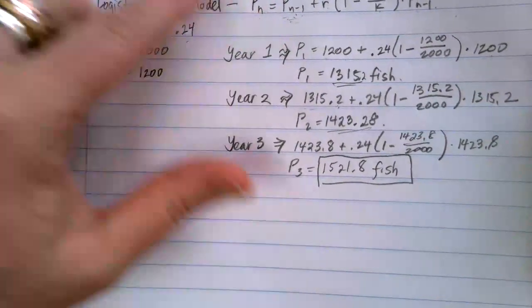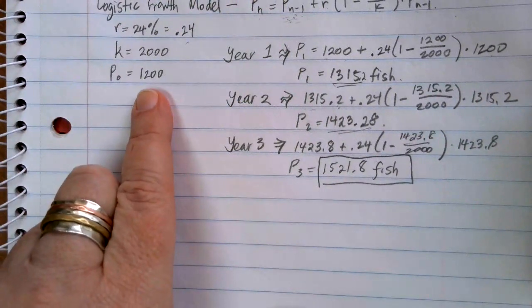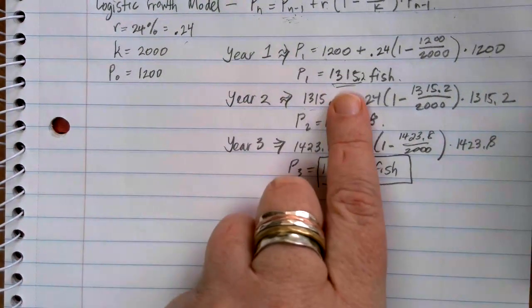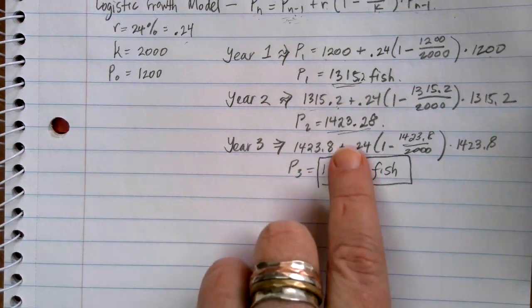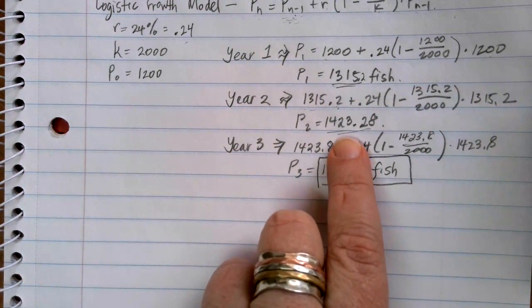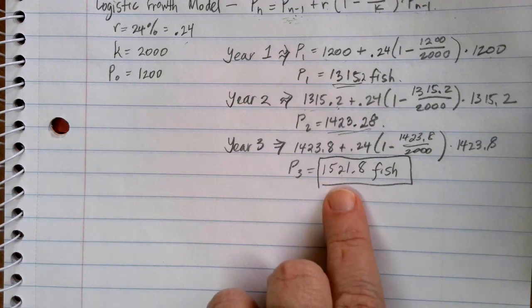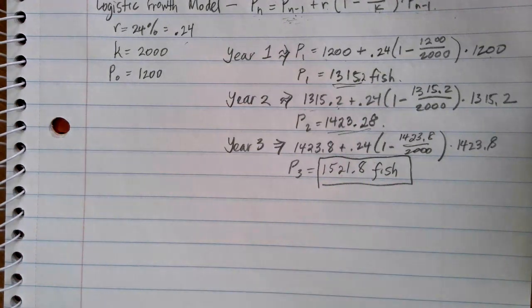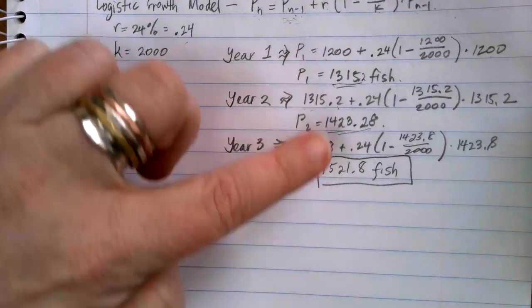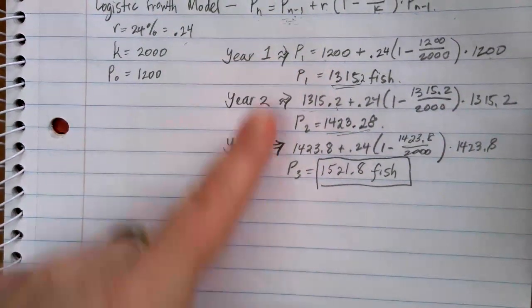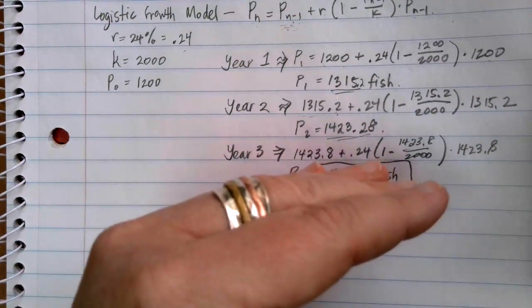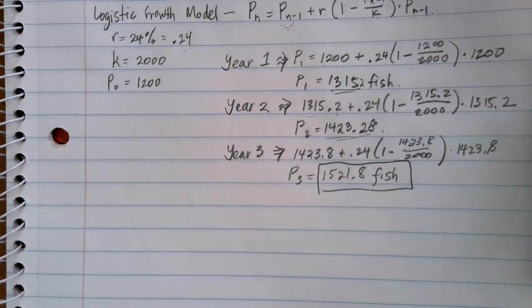Finished by the end of year three. Now, if you notice when we went, if you're looking at kind of how this is growing, at 1,200 fish, I got up to 1,315, so it grew by about 115 fish. When I went up to the next year, it only grew by about 113 fish. And when I went up to the next year, it only grew by about 102 fish. And so as you're going, the closer that you get to 2,000, the slower that growth is happening because it's getting closer and closer to the upper limit for food and other resources in the environment.